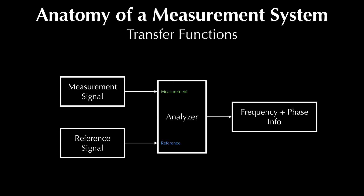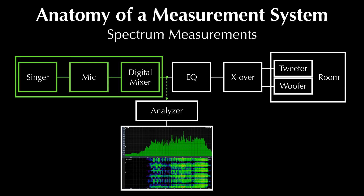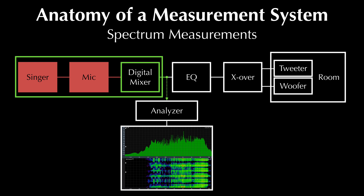Let's look at a simple sound system. We have a singer singing into a mic, which is fed into a digital mixer, and from there into an equalizer, into a crossover, into a speaker consisting of two different drivers — a tweeter and a woofer — which then propagates into a venue. With a single-channel measurement, we could take our measurement signal from anywhere in the sound system, and the analyzer would tell us absolute information about the signal at that point. So if we measure the signal coming out of the digital mixer, we'll get information about the singer, the microphone they're singing into, and the digital mixer. But if we only wanted to know about the digital mixer itself, this information isn't actually helpful to us, because we're getting excess information about the singer and the microphone, which are two unknowns.